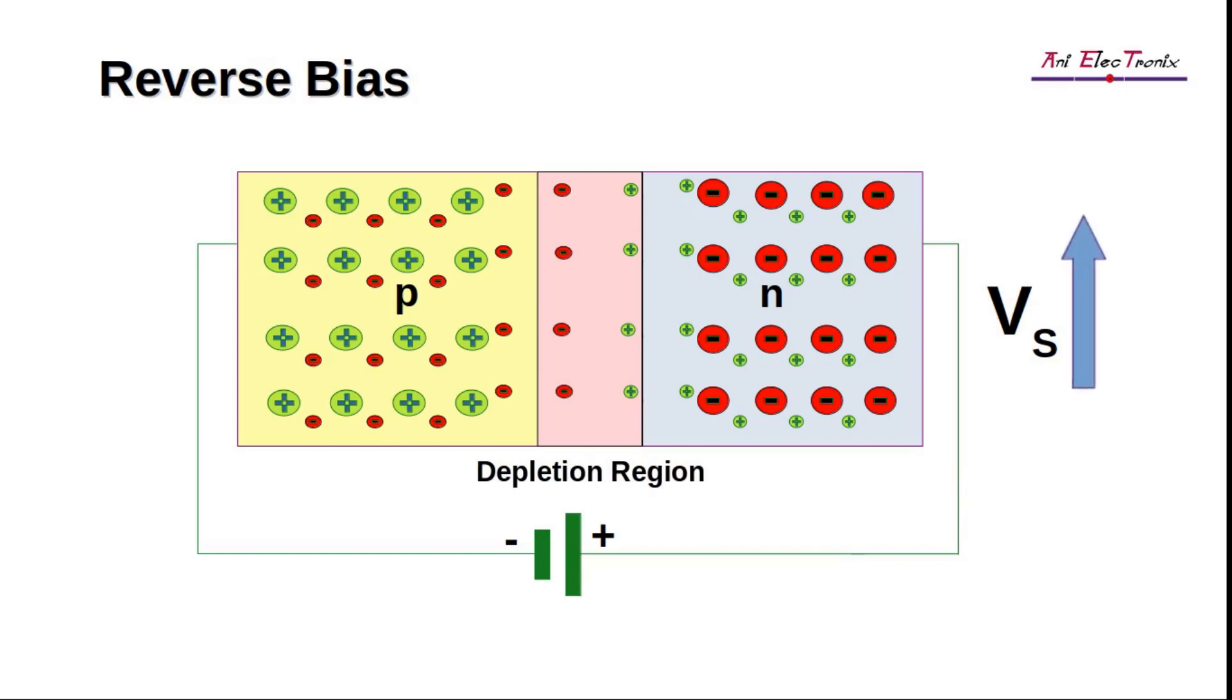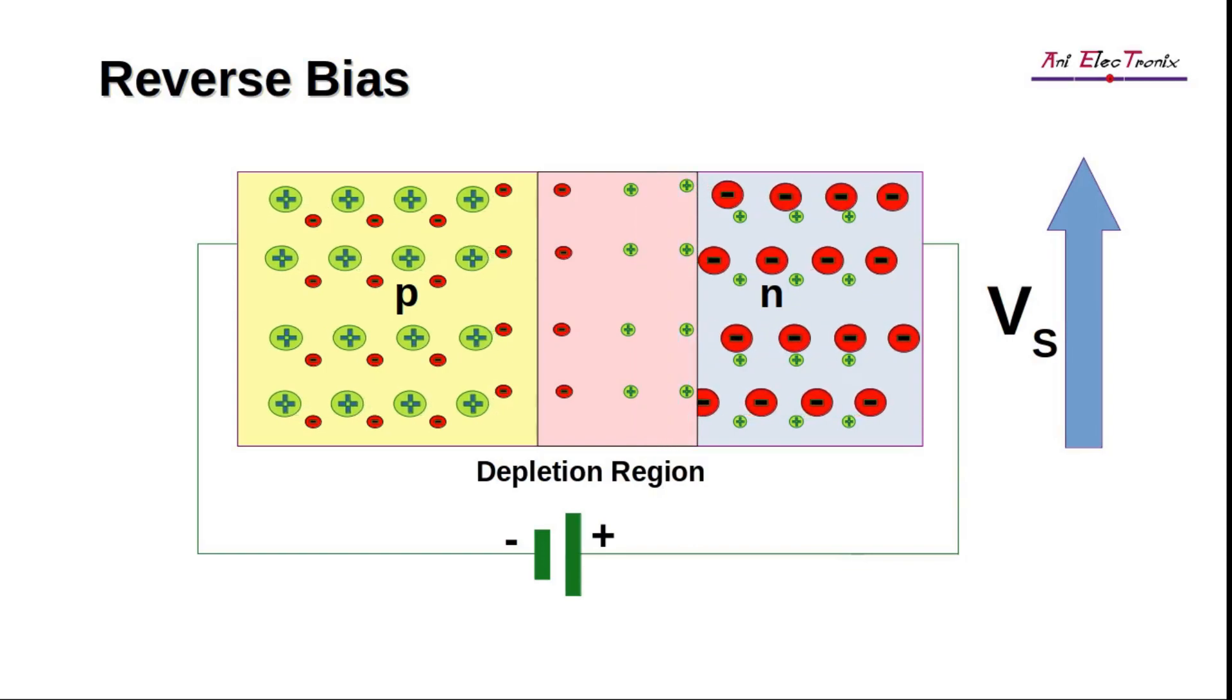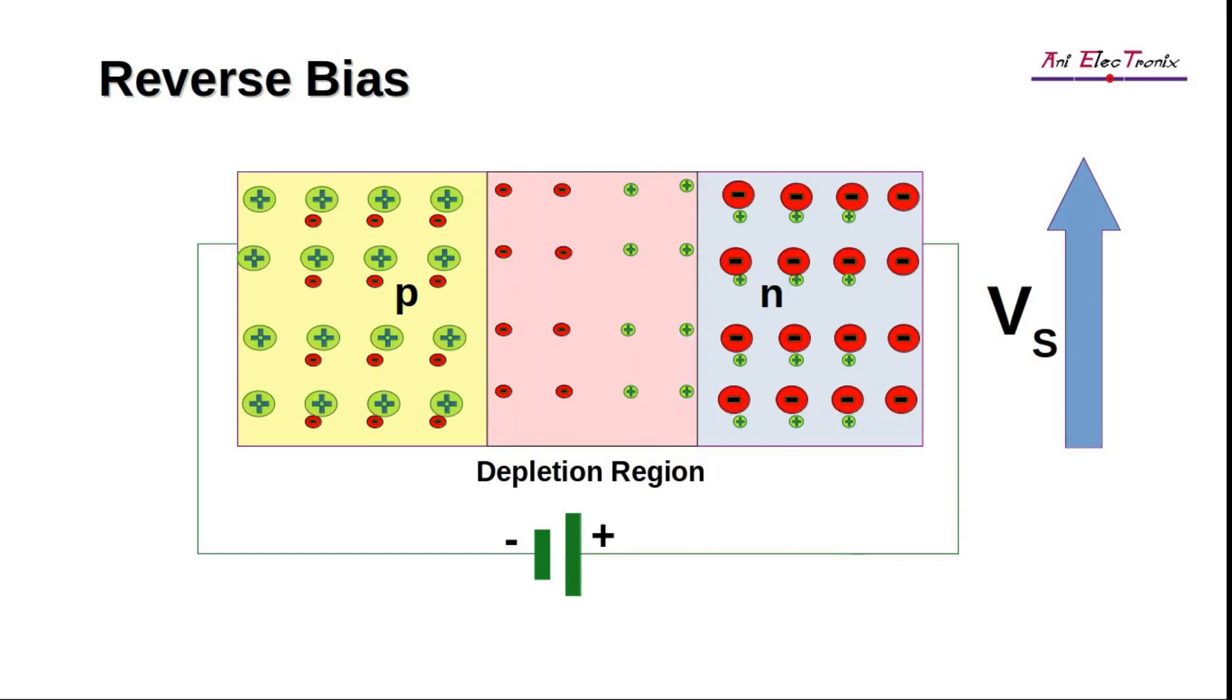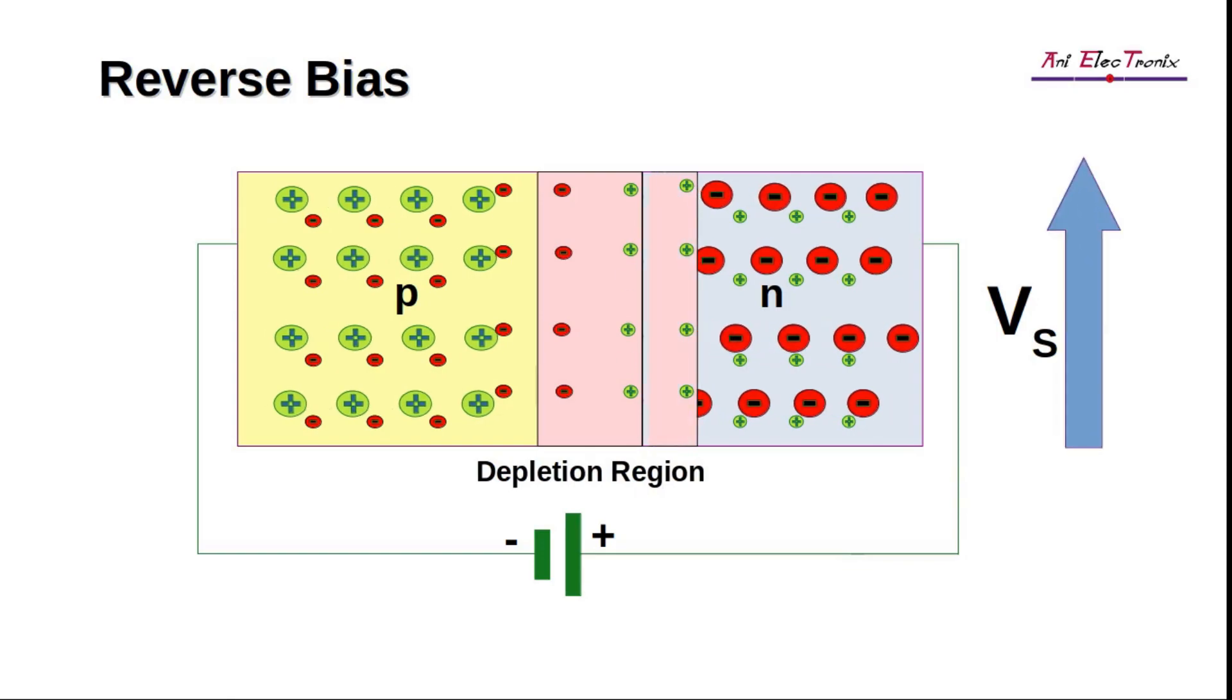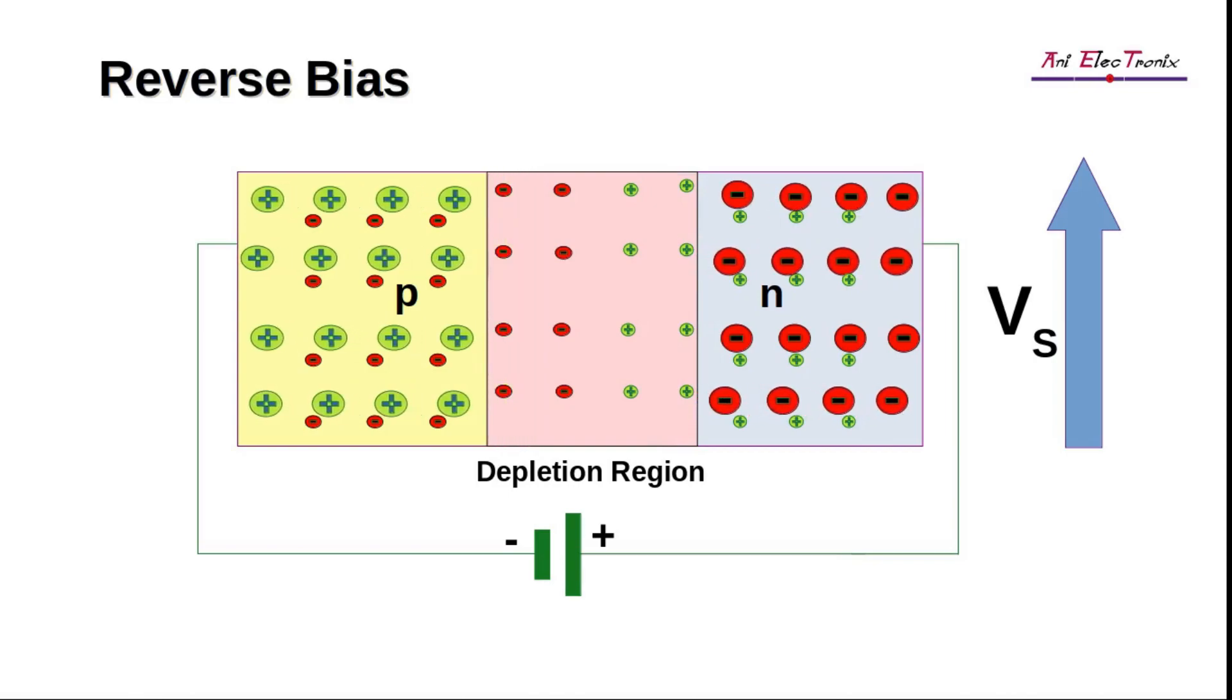As the source voltage increases, the width of the depletion region increases as the majority carrier holes on the P side and the minority carrier electrons on the N side move away from the junction. With a reverse biased P-N junction diode, the width of the depletion region is wide and the charge stored between the P and N regions is minimal. Due to this, the capacitance of the P-N junction diode decreases with increasing reverse bias voltage.